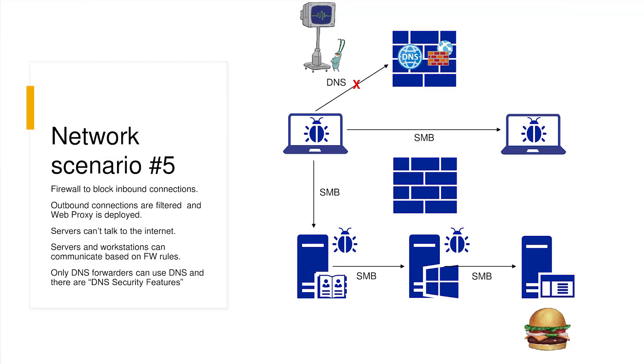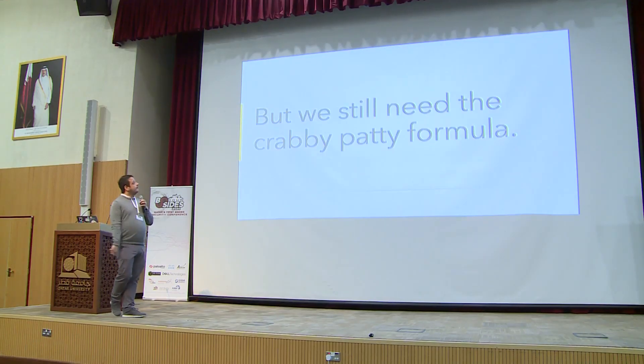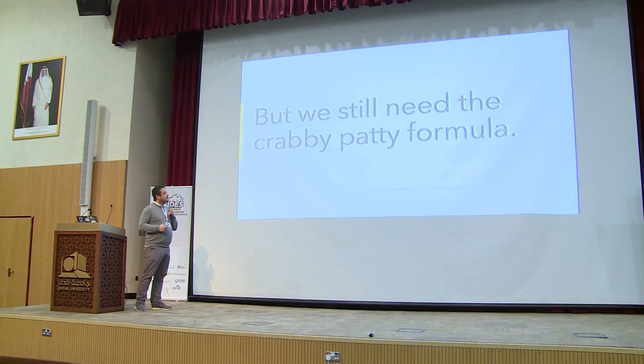Scenario four: the firewall also does web filtering or HTTP/HTTPS inspection. In this case, we fall back only to DNS and everything else stays the same. Then the incident response team deploys a DNS proxy, and we basically cannot communicate anymore because we've been detected. But we still need to access the Krabby Patty formula, of course.